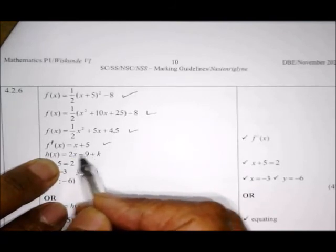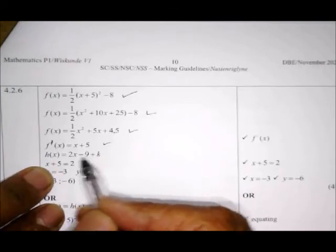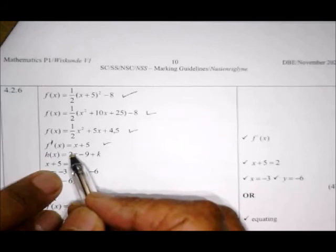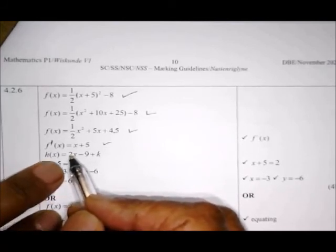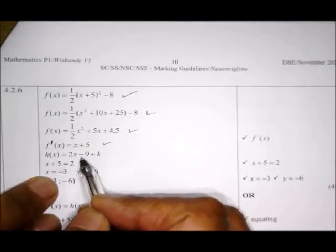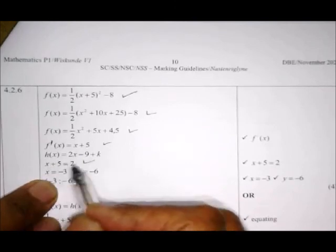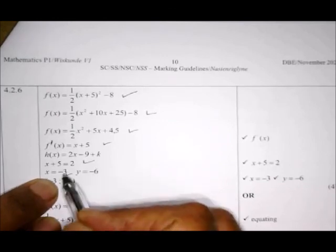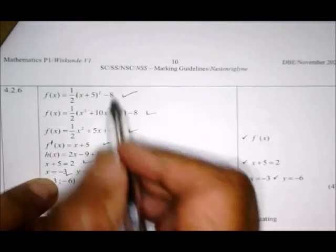Therefore, the gradient of h is 2. And f'(x) = 2x + 10 is also the gradient. So 2x + 10 = 2 because they both represent gradient. Solving gives x = -3. To get y, substitute x = -3 into the parabola equation. Using your calculator, you get y = -6. The point of contact is (-3, -6).